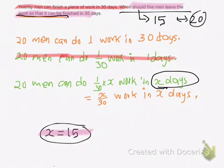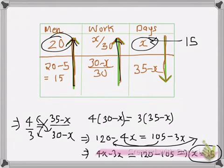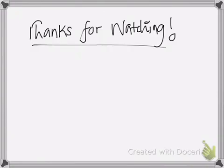So our answer becomes 5 men should leave the work after working for 15 days, and then for the remaining 20 days, 15 men have worked. So here 20 men have worked for 15 days and then the remaining 15 men have worked for, when you substitute the value of 15 in this x, we get 20 days to complete the total work. So I hope you got the concept and yes, thanks for watching.